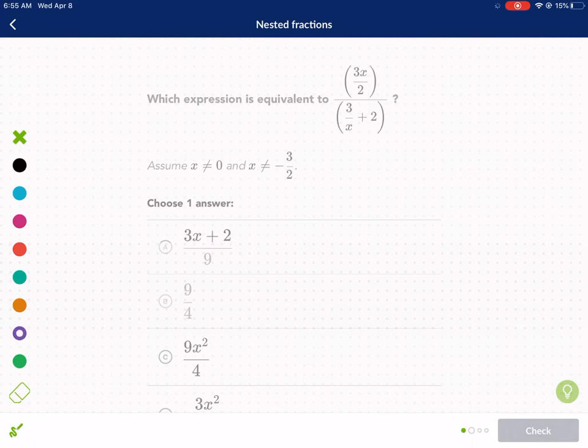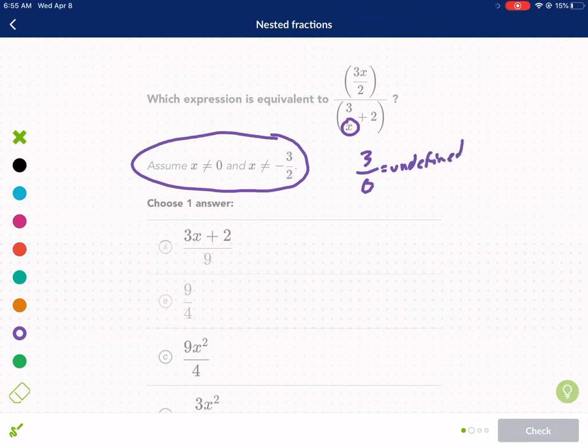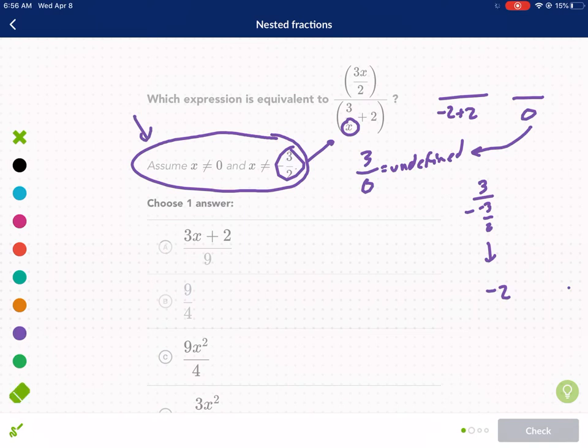So keep in mind that it gives you this right here because you can't have 0 in the denominator. So if we plugged in 0 in for x here, that would be a problem because it would be 3 divided by 0, which is undefined. And we can't have negative 3 halves in for x because if we were to do that, after we do 3 divided by negative 3 over 2, this works out to be negative 2. So then we would have negative 2 plus 2 in the denominator, which would be divided by 0. Again, that also is undefined. So I just want you to know why they say that. It's because you can't have an undefined answer.